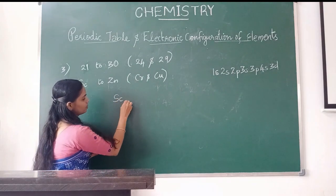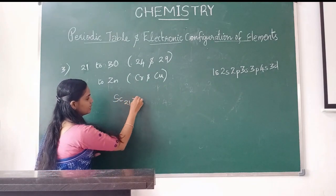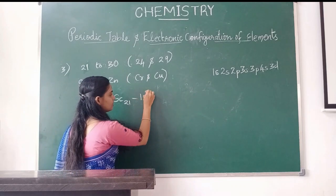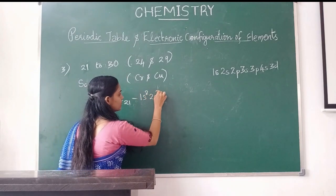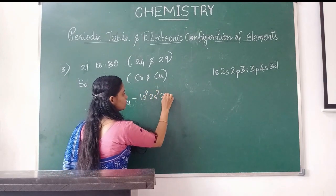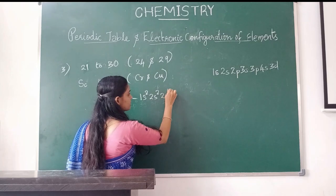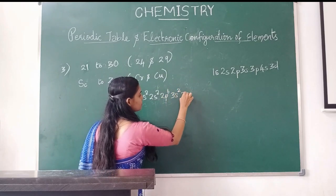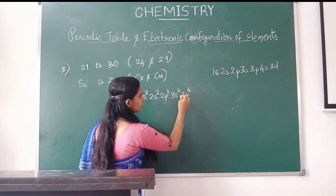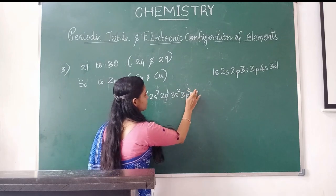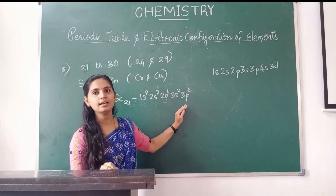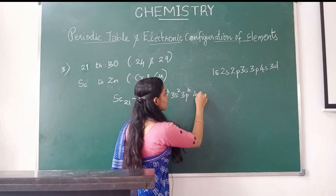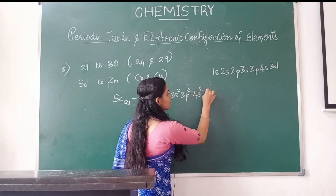For example, scandium has atomic number 21. Its electronic configuration: 1s2, 2s2, 2p6, 3s2, 3p6, 4s2, 3d1.